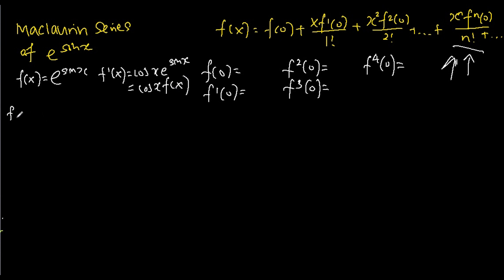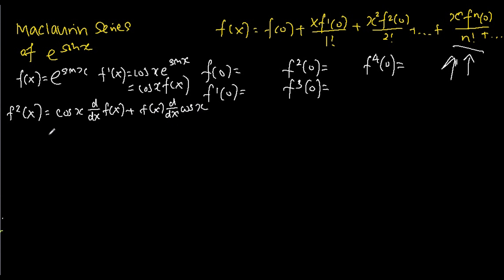We now find the function differentiated two times using the product rule of differentiation. We have cosine x times the derivative of f(x) plus f(x) times the derivative of cosine x. This equals cosine x times f'(x) plus f(x) times negative sine x.